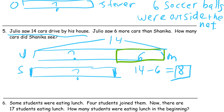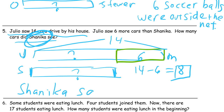Now I just need my answer statement. It's about how many Shanika saw. Shanika — I can spell her name because it's written in the question — saw eight cars.